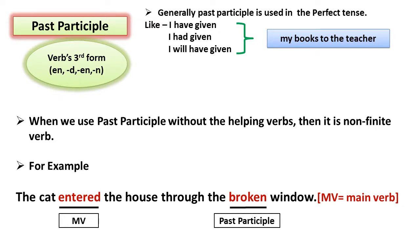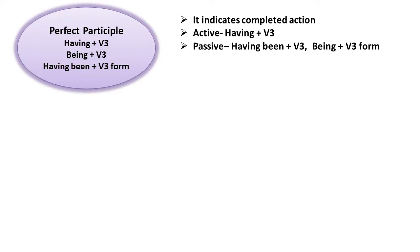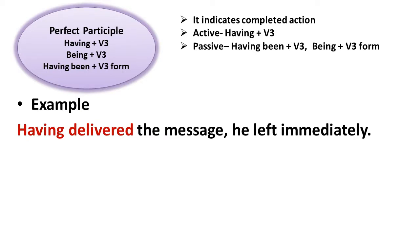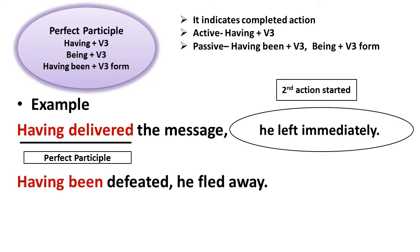Now let's understand perfect participle. Perfect participles are created using 'having + V3,' 'being + V3,' or 'having been + V3.' Perfect participle indicates a completed action and can be active or passive. For example: 'Having delivered the message, he left immediately.' The delivering of the message is the first completed action, and leaving immediately is the second action. Therefore 'having delivered' is a perfect participle. Second example: 'Having been defeated, he fled away.' Defeating is the first completed action, so 'having been defeated' is a perfect participle.